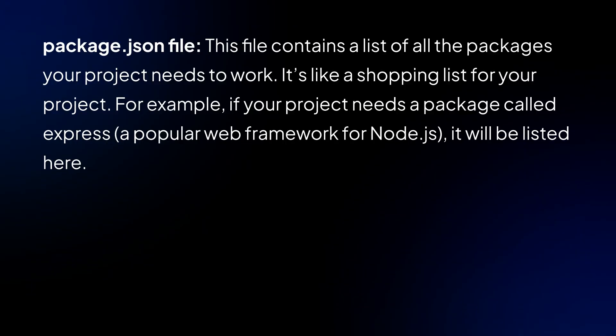Here is a simple breakdown of the terminologies. The package.json file is the file that contains all the packages your project needs to work — it's like a shopping list for your project. For example, if your project needs a package called Express, a popular web framework for Node.js, it will be listed here. Everything that you need for that project, you list in the package.json file.